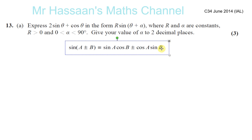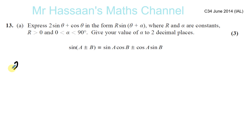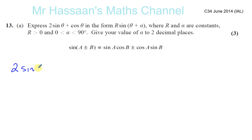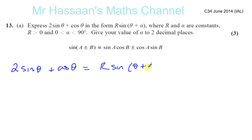I want to express this in that form. So I can say 2 sine theta plus cosine theta — which means 1 cosine theta — is equal to R sine(θ + α). So R sine(θ + α) is the form we want to write it in. What I'm going to do is expand this using this expansion here.